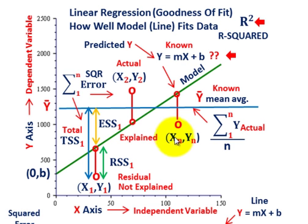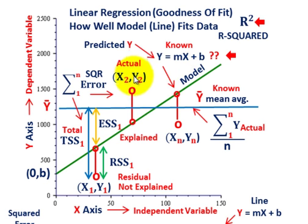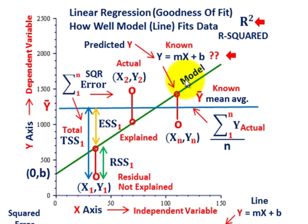We've taken those actual x, y data points and calculated a linear line that represents those points. What we want to do is determine whether this linear line is a good representation of the data points. This linear line is really our regression model — that's the green upward-sloping line. For our line, we have y, our dependent variable, equals m — that's the slope, the change of y over the change of x.